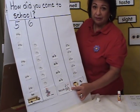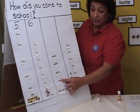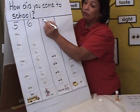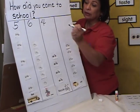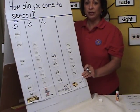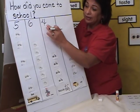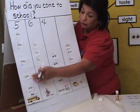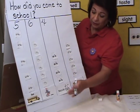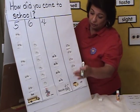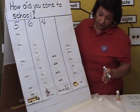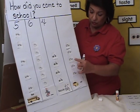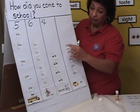What about the bicycle? How many here? One, two, three, four. Four students rode their bike to school today. So we can see the difference as the graph is showing how many students came in the bus, how many students walked to school, how many rode their bicycle. Let's see how many came in the car with their parents today — one, two, three, four, five.